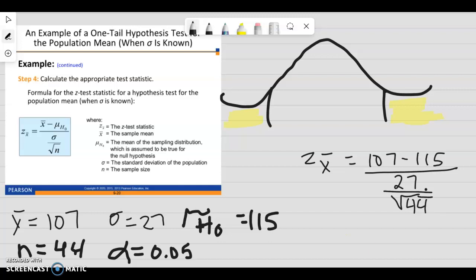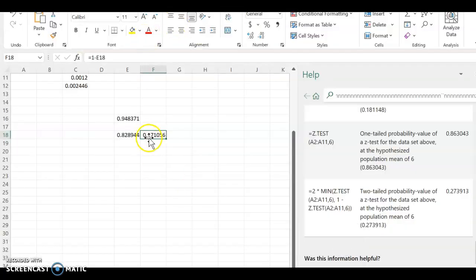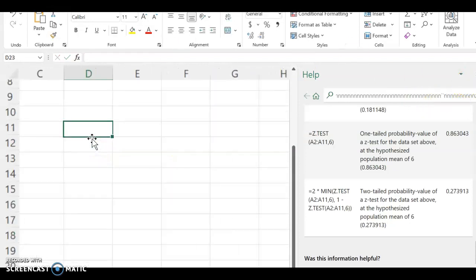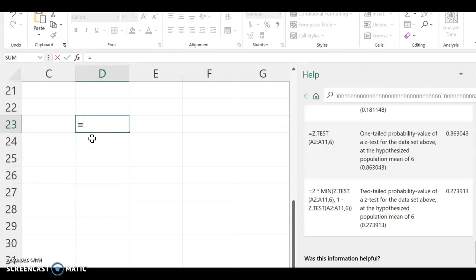So I'm just going to do this in Excel so you can actually see what I'm doing. Alright, so I'm going to do equals, and the top was 107 minus 115, divided by 27, divided by the square root of 44.